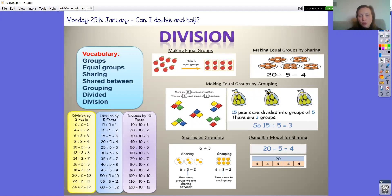We then might need to think about whether we're going to be sharing or grouping. Sometimes we will link it to the bar model. Last time we looked at our multiplication facts; this time we're going to look at our division facts, so dividing by two, five and ten.